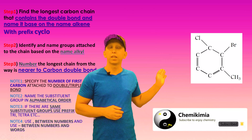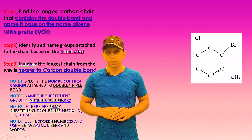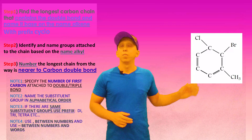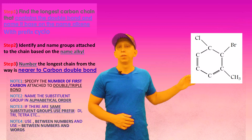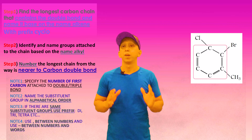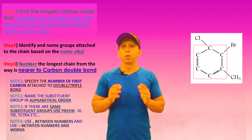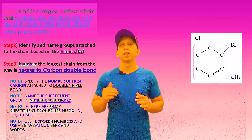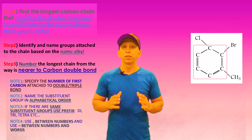The third structure is exactly like the second one. The only difference is that here we have a triple bond, and we know the name of a triple bond hydrocarbon is based on alkyne, so the name of our main chain changes to cyclohexyne. Let's name our final structure.